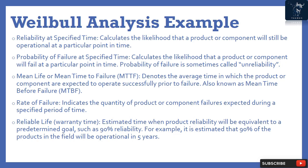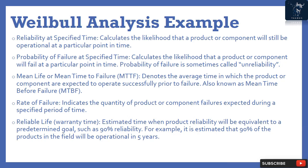Some additional information that can be examined using a Weibull analysis includes: Reliability at specified time — calculates the likelihood that a product or component will still be operational at a particular point in time. Probability of failure at specified time — calculates the likelihood that a product or component will fail at a particular point in time (sometimes called unreliability). Mean life or MTTF — denotes the average time a product or component is expected to operate successfully prior to failure, also known as MTBF. Rate of failure — indicates the quantity of failures expected during a specified period of time.